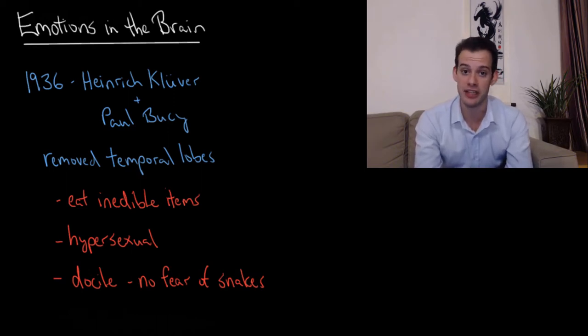The monkeys also became hypersexual so they would attempt to mate not just with other rhesus monkeys but with other species or even with inanimate objects. Lastly, the monkeys became incredibly docile. They no longer showed fear when they were handled by the researchers.